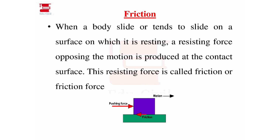When a body slides or tends to slide on a surface, the resisting force opposing the motion is produced at the contact surface. That is the force which opposes the motion in the opposite direction. That resisting force produced at the contact surface is the frictional force.